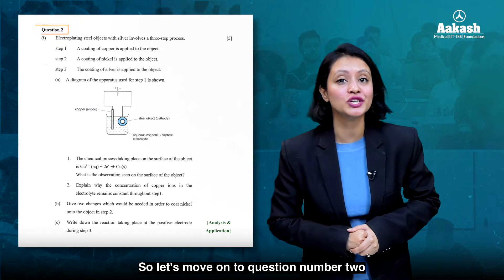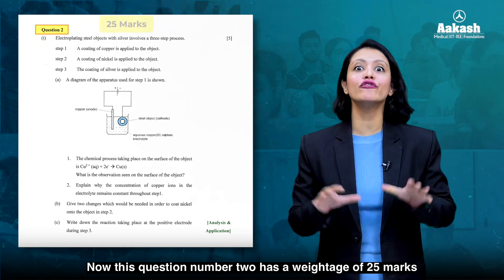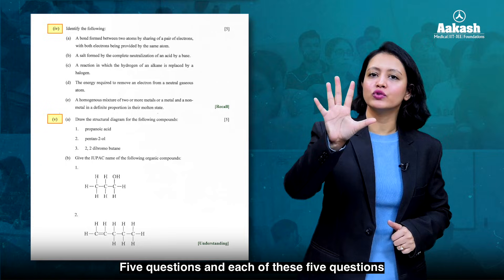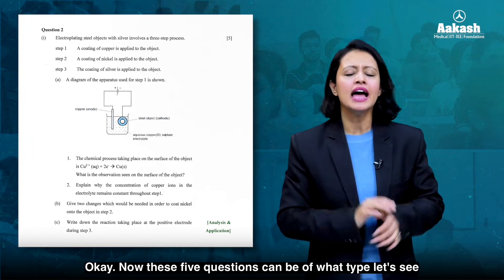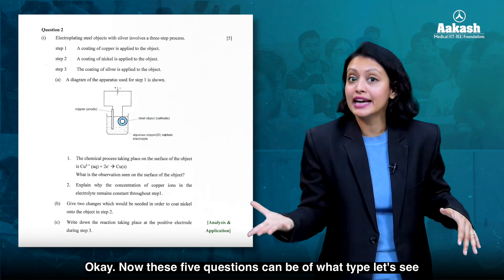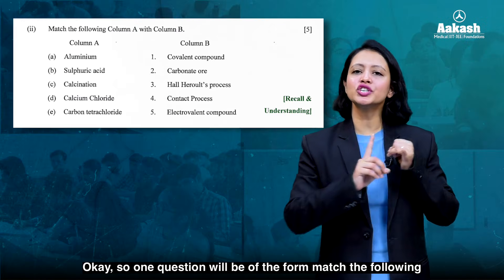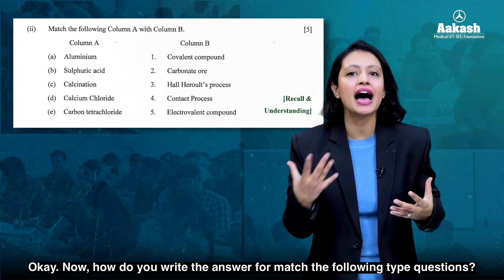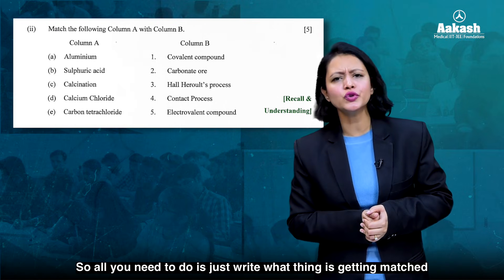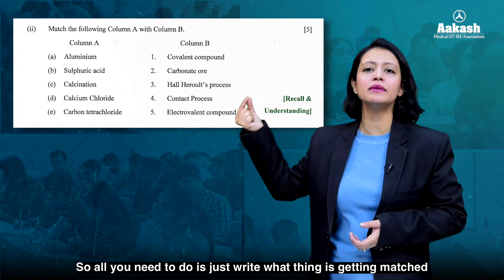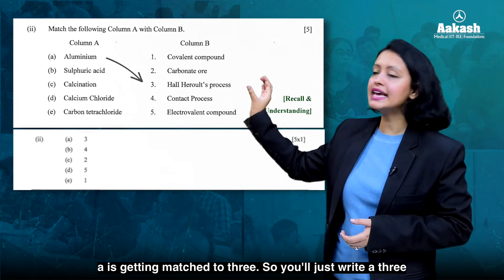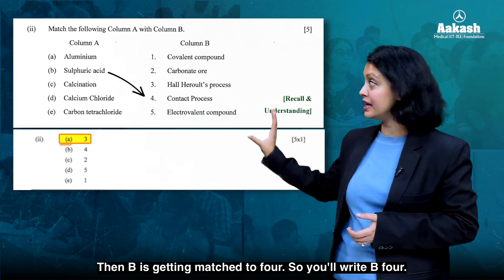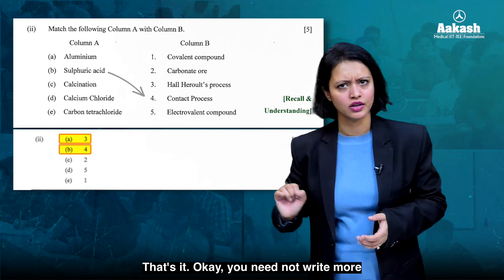Question number two in chemistry has a weightage of 25 marks, with five questions each worth five marks. One question will be of the form match the following. To write the answer, just write what is getting matched to what. For example, if A is getting matched to 3, write A–3; if B is matched to 4, write B–4. That's it — you need not write more.